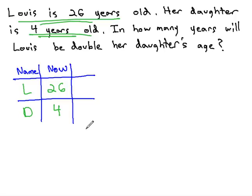This time, we are asked in how many years. The implication is we're moving forward in time, so we know we need to add for our last column.